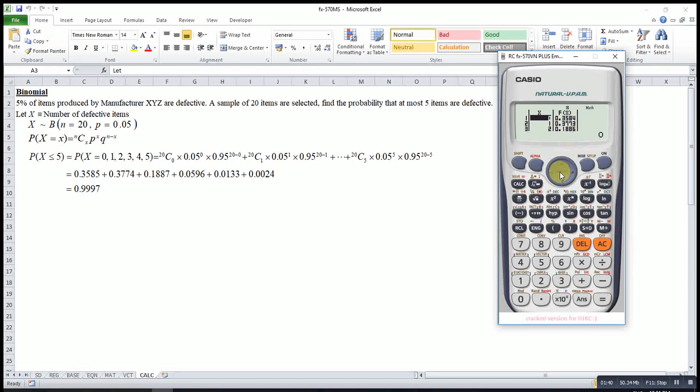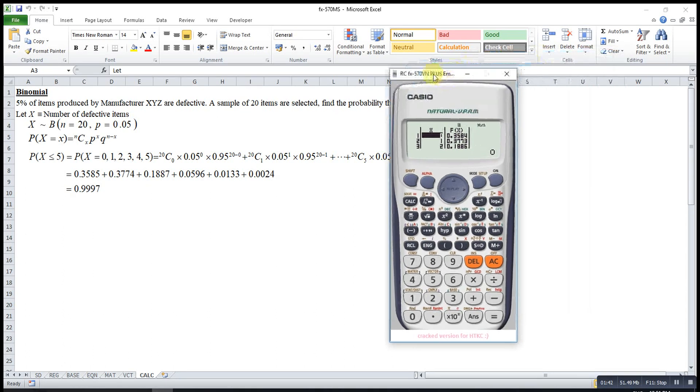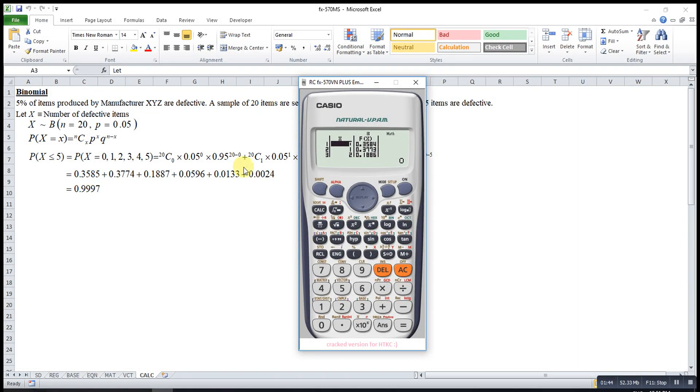So these are all the probabilities. Like when X equal to 0, X equal to 1, X equal to 2. We can press and see the probability. Then X equal to 3, 4.